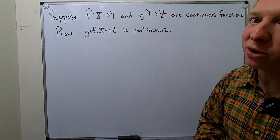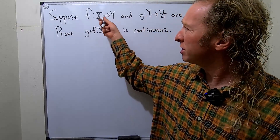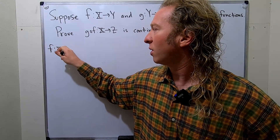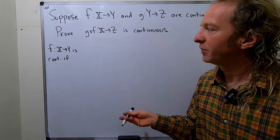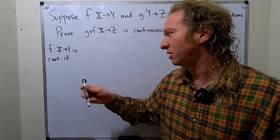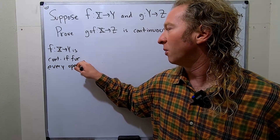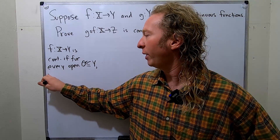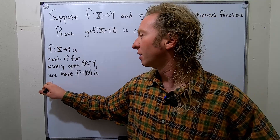Now let me briefly recall the definition of continuity that we're going to be using in this problem. This is really, really beautiful. We say f from x to y is continuous if — I'll say it in words first, then write it down — whenever you take an open subset of y, the inverse image of that set is open in x. That's what it means to be continuous. So for every open O contained in y, we have the inverse image of O is open in x.